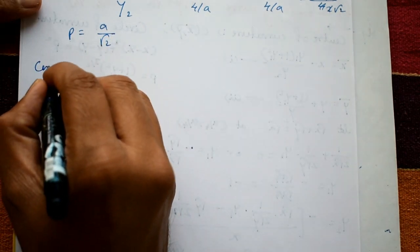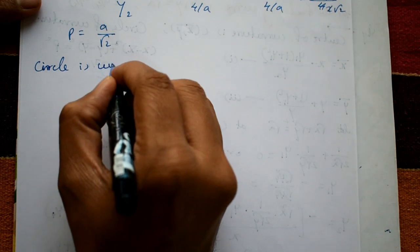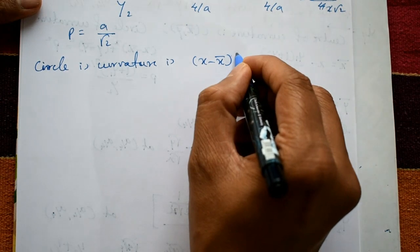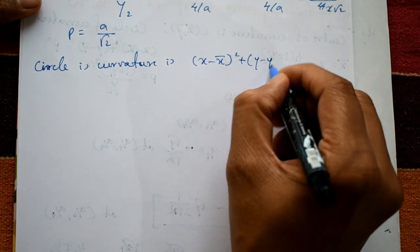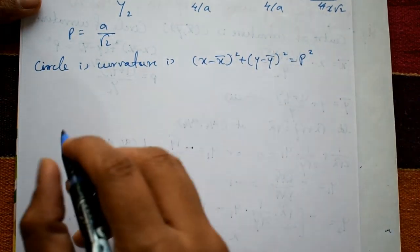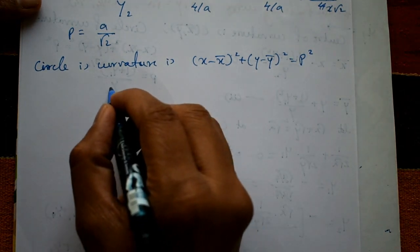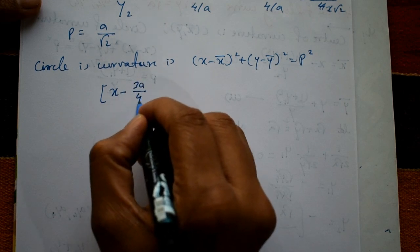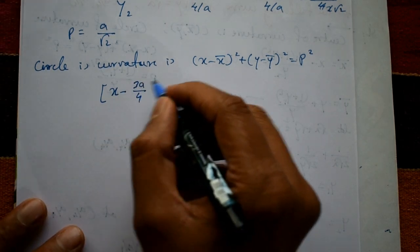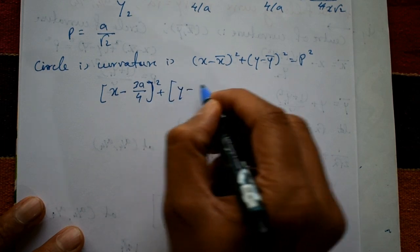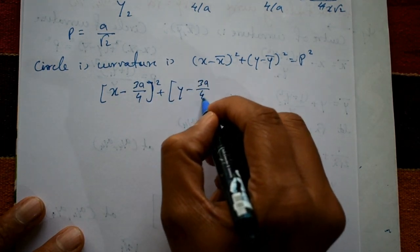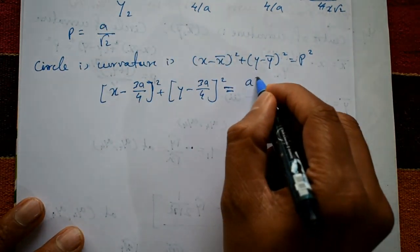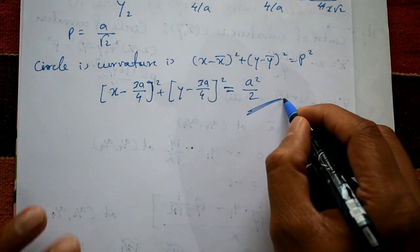The circle of curvature equation is (x − x̄)² + (y − ȳ)² = ρ². Substituting x̄ = 3a/4, ȳ = 3a/4, and ρ² = a²/2: (x − 3a/4)² + (y − 3a/4)² = a²/2. This is the required solution.